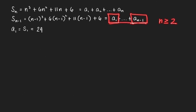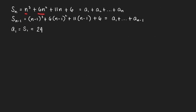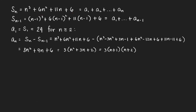When n equals 2, we only get a sub 1. So the first term of the sequence, a sub 1, equals the sum of the first term — substituting n equals 1 gives us 1 plus 6 plus 11 plus 6, which equals 24. For n greater than or equal to 2, we can use both expressions.